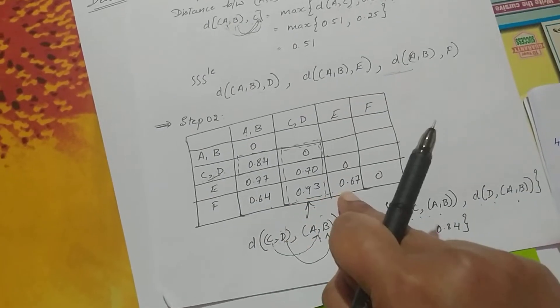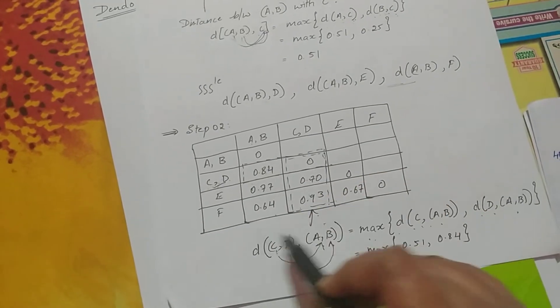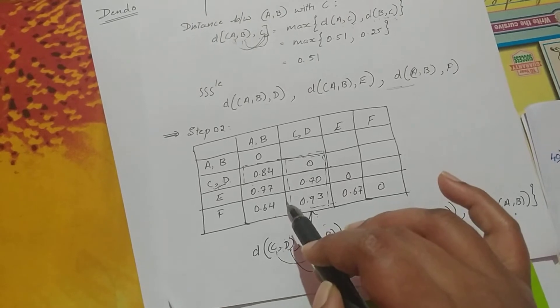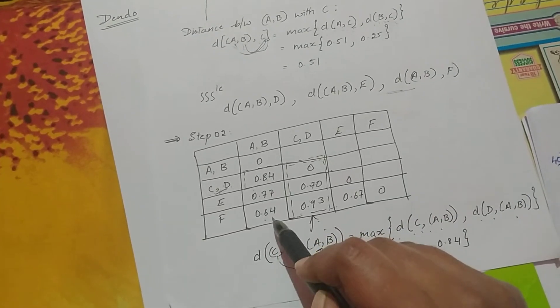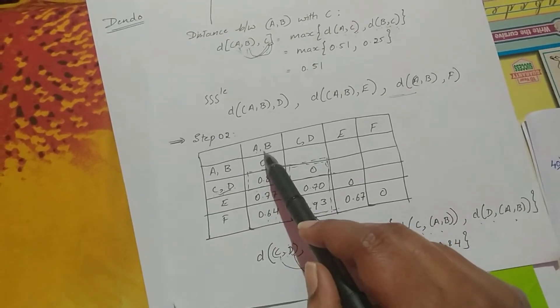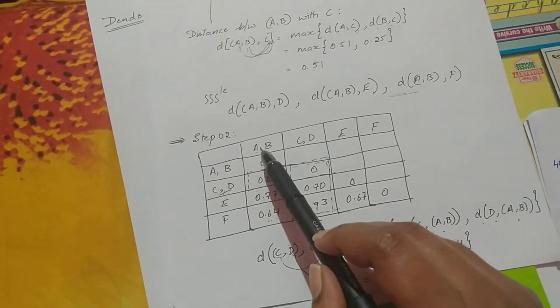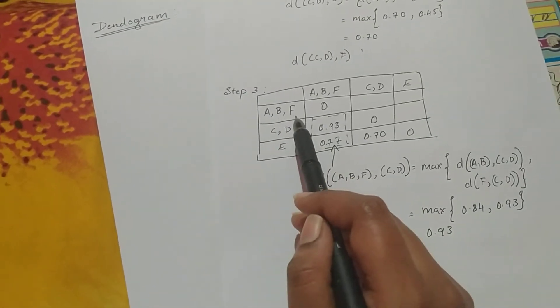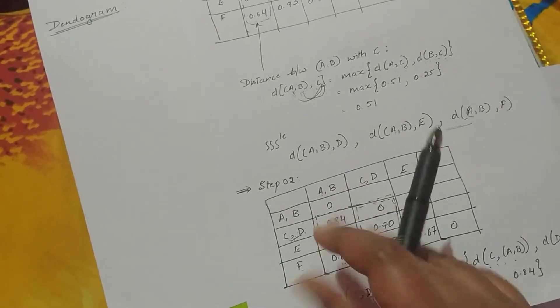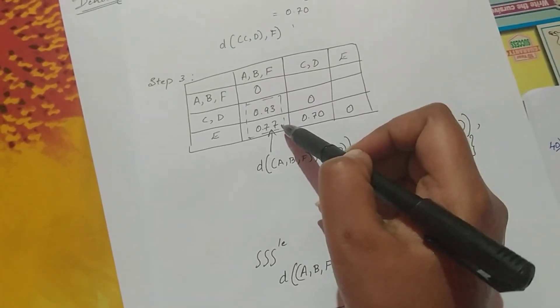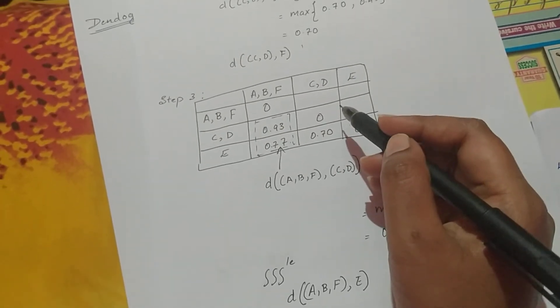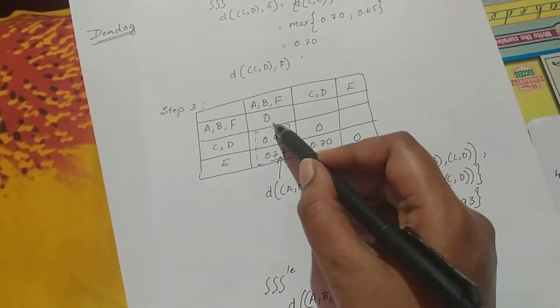From the step-two table, we identify the minimum distance. The minimum is 0.64, which is the distance between cluster AB and point F. So we combine AB with F to form cluster ABF. The remaining points CD and E stay as before; we need to calculate the new distances for the ABF cluster.